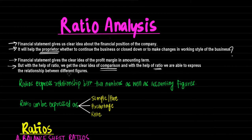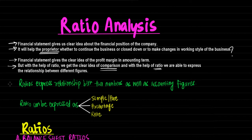If I tell you a firm's assets are Rs 1 lakh and firm's profit is Rs 2,000, these are mere amounts unless and until we make some relationship between assets and profits. Mere numbers will not help. Creating relationships in numbers and making some sense would definitely help a businessman to take major decisions. So ratios express the relationship between two numbers as well as accounting figures.